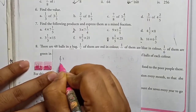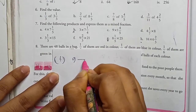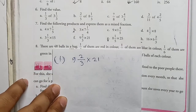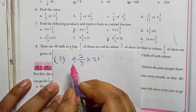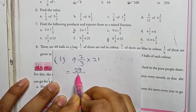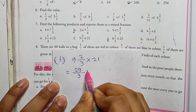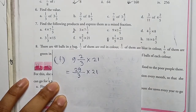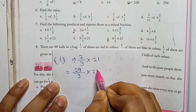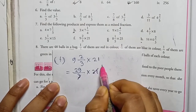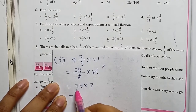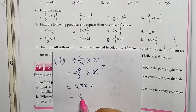Question 7f: 9 2/3 × 21. Convert the mixed fraction: 3×9=27, 27+2=29, giving 29/3. Multiply: 29/3 × 21. Dividing 21 by 3 gives 7, so 29×7=203. The answer is 203.